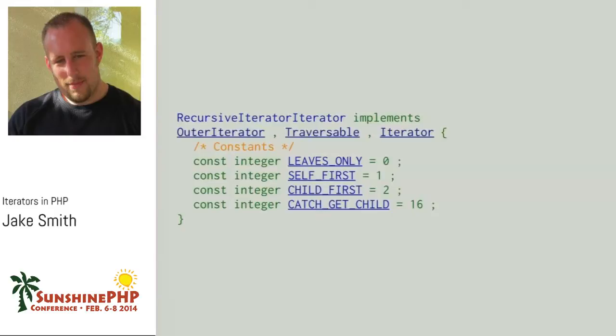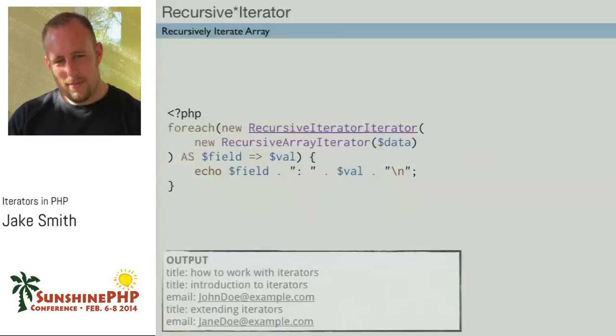This is where we introduce the RecursiveIteratorIterator — the names are wonderful. This is what you actually use to iterate over a recursive iterator. The default mode is LEAVES_ONLY, so only the children are outputted and the parent key won't show up. You can set it to SELF_FIRST and it'll output the parent and then all the children. CHILD_FIRST outputs all the children, then the parent. By wrapping it in the RecursiveIteratorIterator, we get our title, email, title, email from the post array — it's actually outputting what we were expecting, not just the word 'array.'